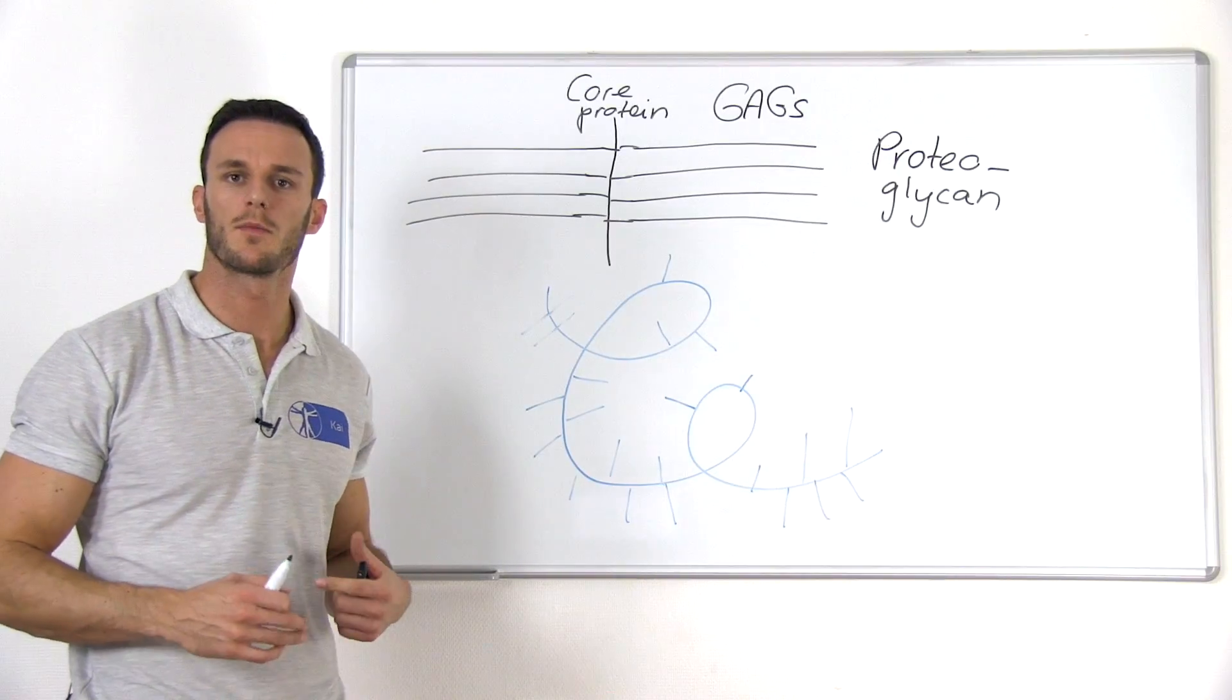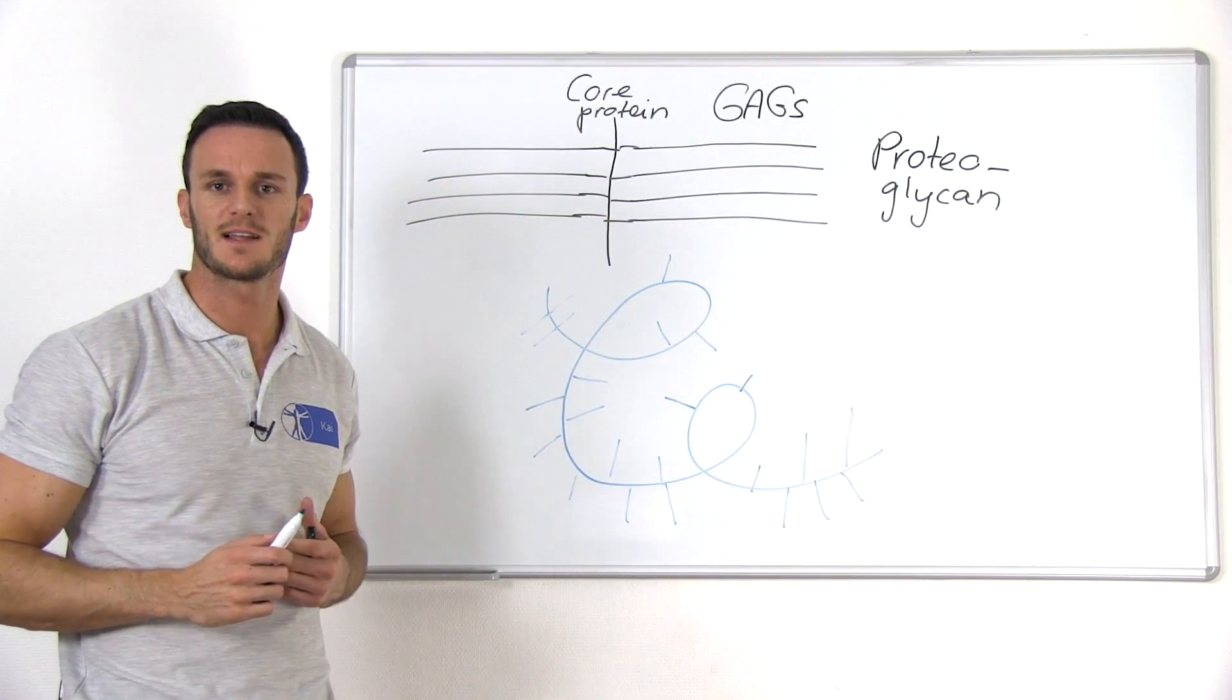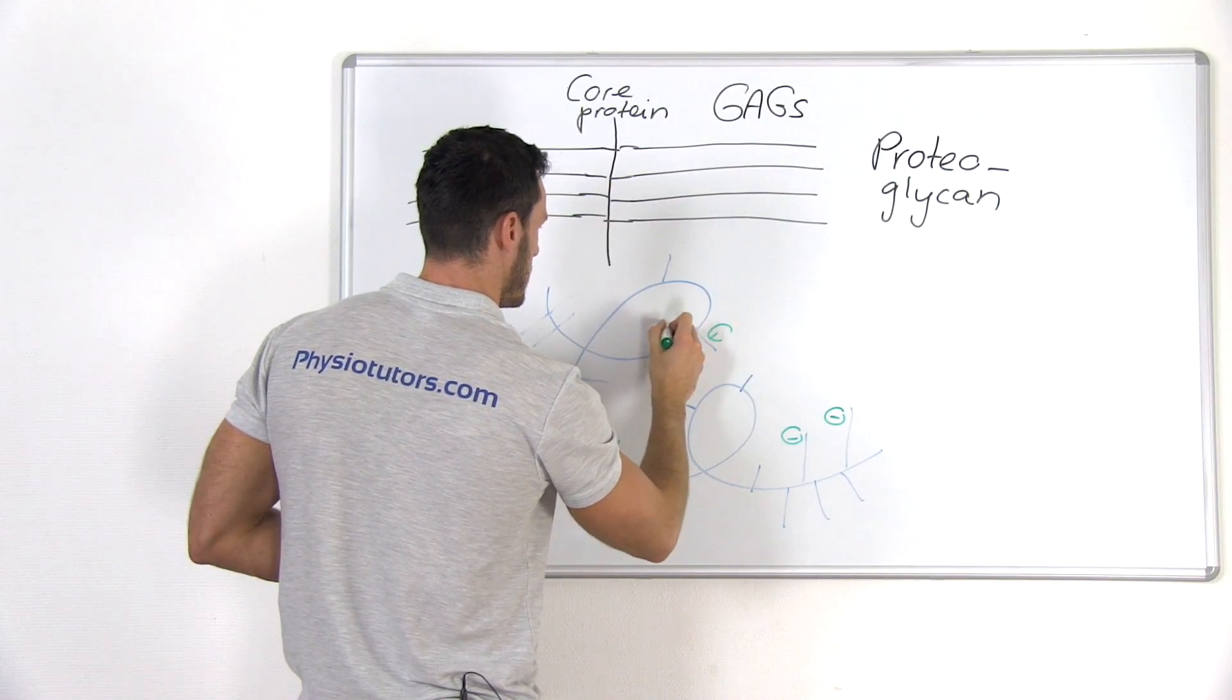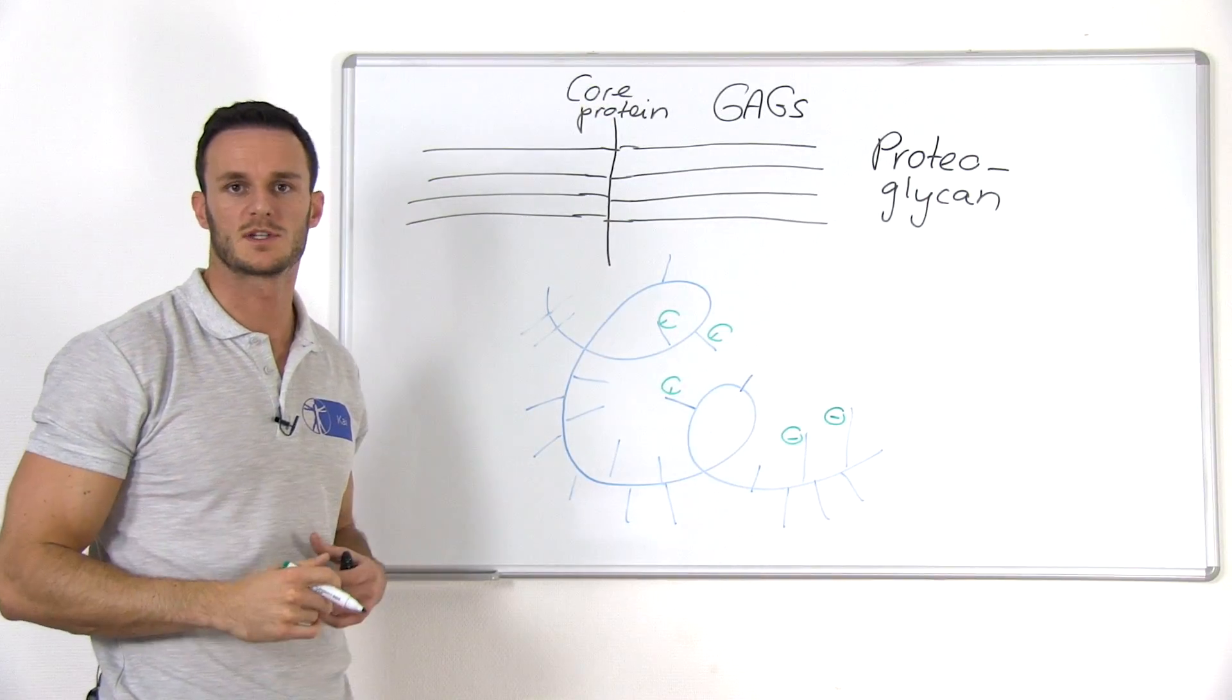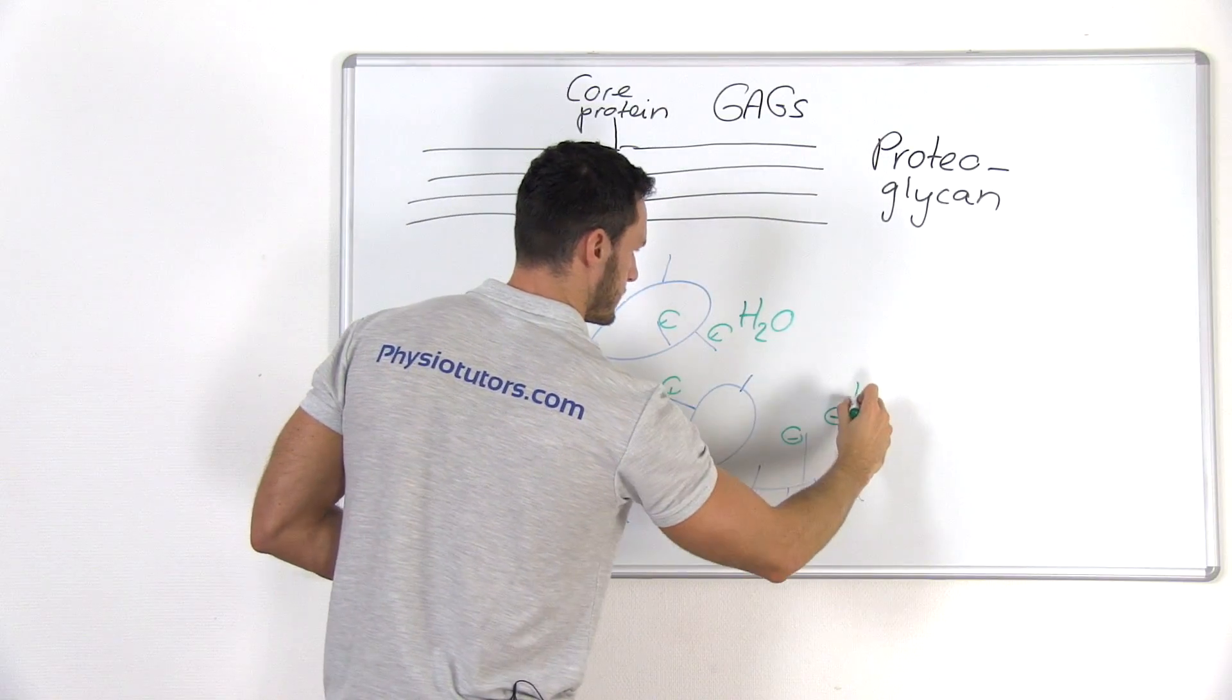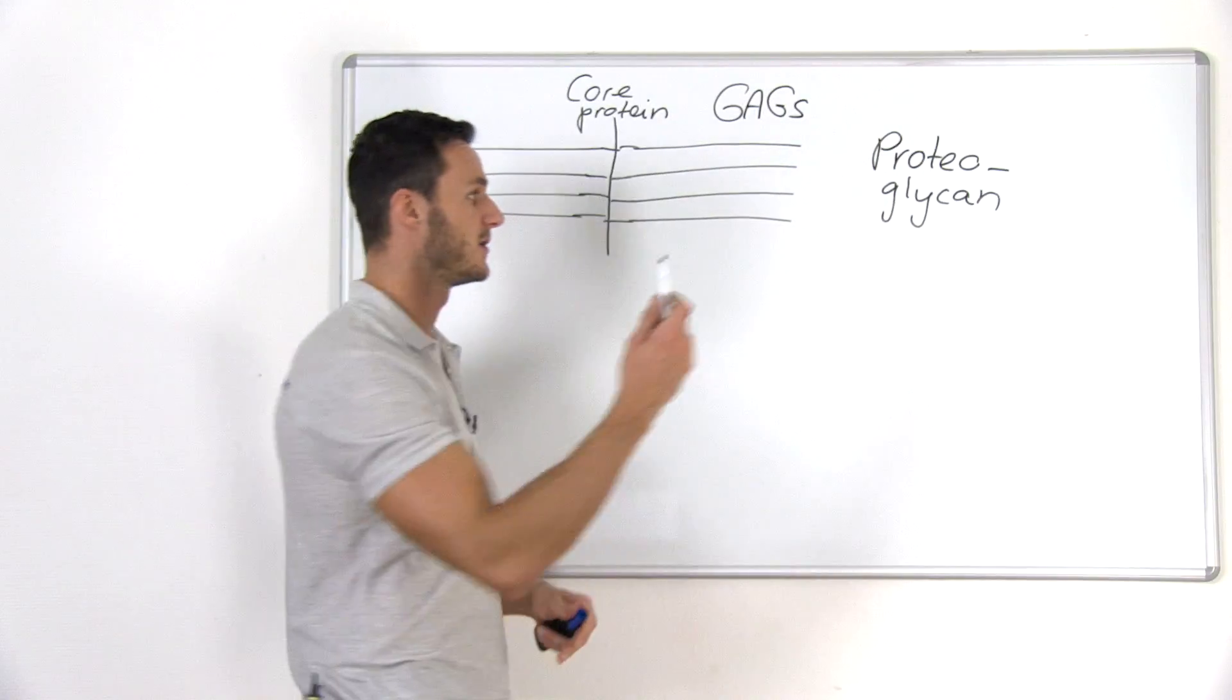In real life, these chains form complex three-dimensional structures. It is important to note that the GAG chains are negatively charged, and because of this negative charge, they attract water which is positively charged. So around those GAGs, we would have H2O everywhere.